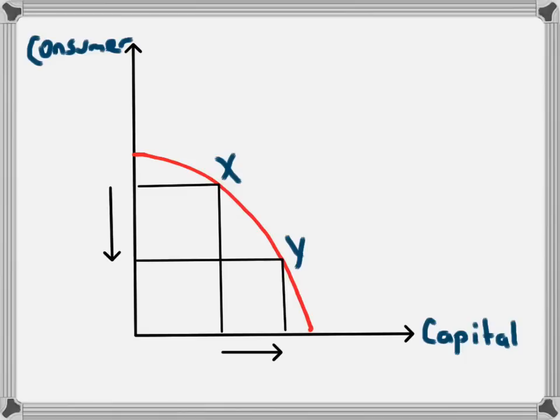Because capital goods are goods which are used in the production of other goods and services, if in the short term the economy was doing this, it would lead to greater gains in the long term because there will be more resources able to be used to produce more goods in the future. Producing at point X might lead to an increase in the production possibility frontier over time due to either increases in technology, more resources, for example, if there's a greater population.